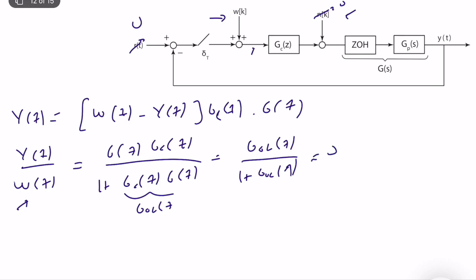What we want is for this transfer function from the noise input to the output to be as small as possible, ideally for all frequencies. Since we have no control over the plant, in order to achieve that, the magnitude of GOL(z) should be very small. This implies that we should have a small gain open-loop transfer function — specifically a very small gain controller — in order to eliminate noise.